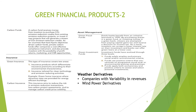Weather derivatives are dealt in by Goldman Sachs and other investment firms because they help wind power developers manage the variability in revenues caused by wind power output.